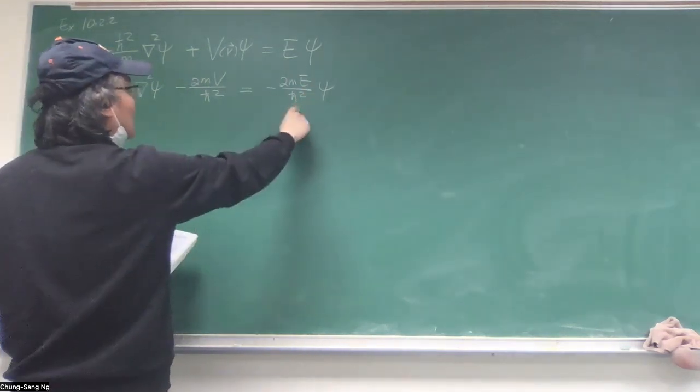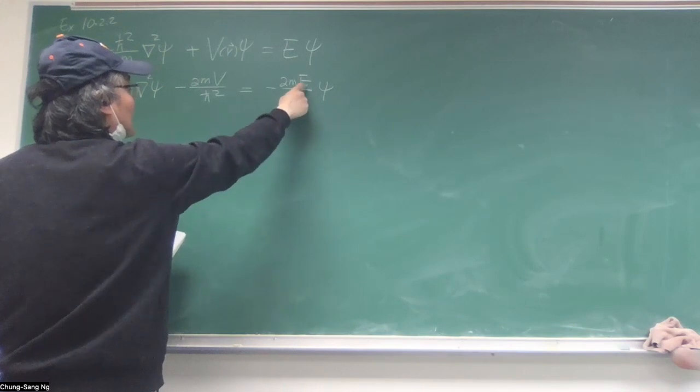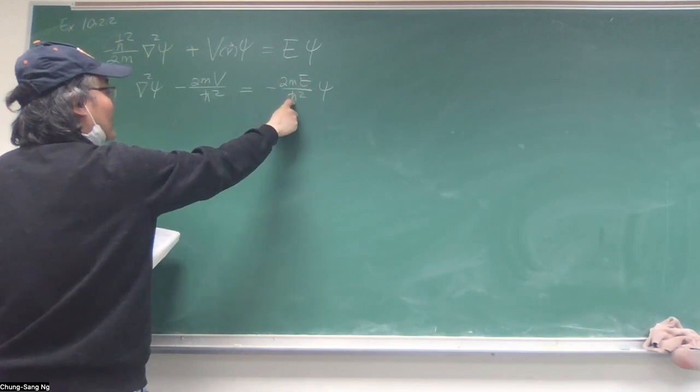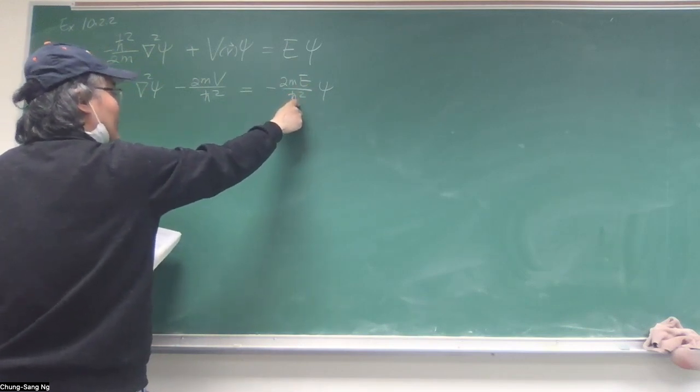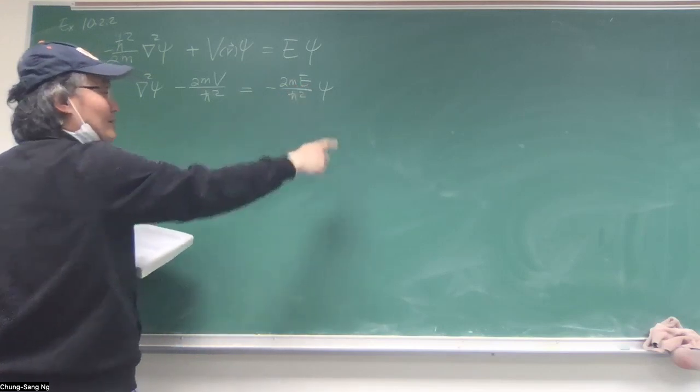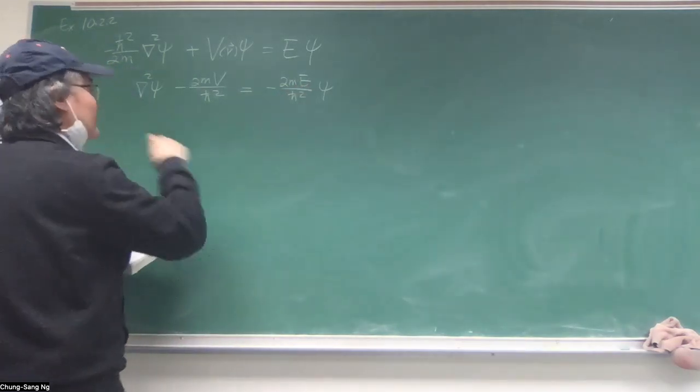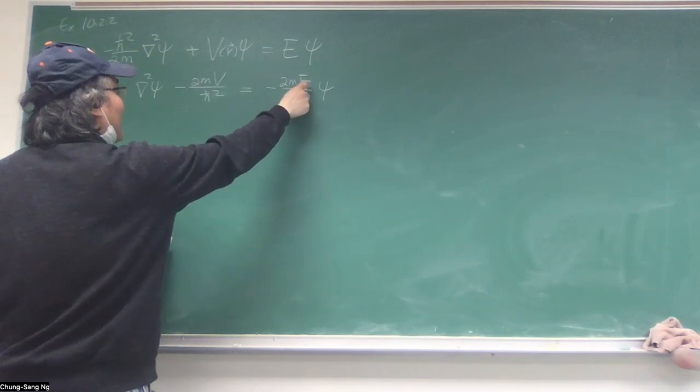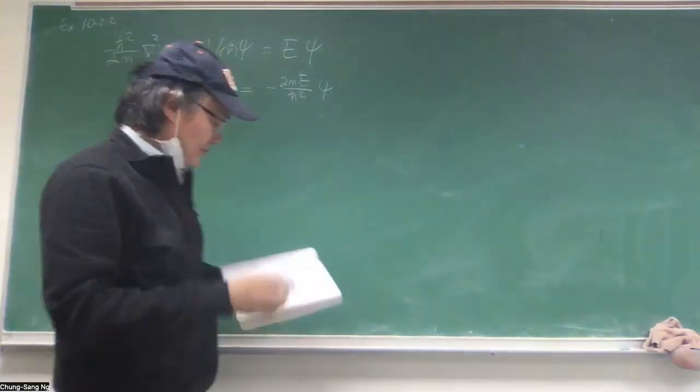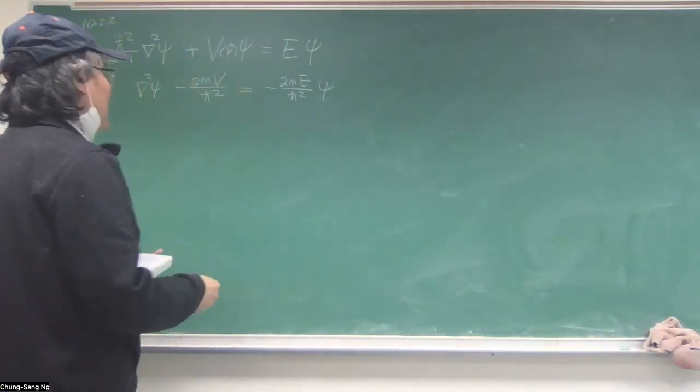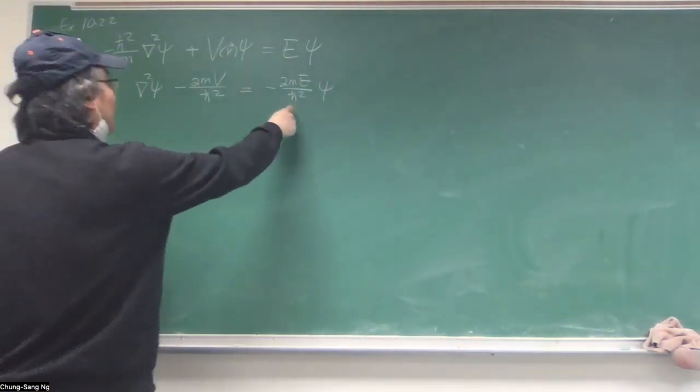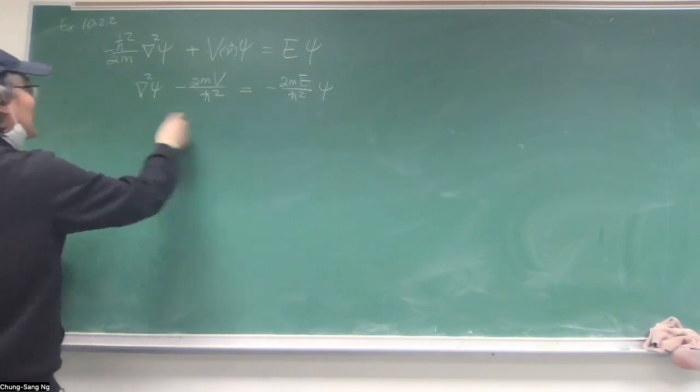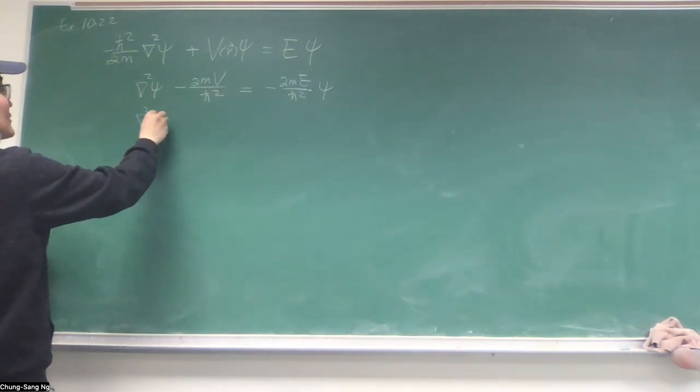Obviously, you can treat it as k-squared, 2m E over h-bar squared as a k-squared. The only problem is that the E can be negative. Then the k-squared becomes actually k becomes imaginary. But assuming if E is positive or we generalize the solution with imaginary k, but we'll do that anyway. So, treat this as k-squared.